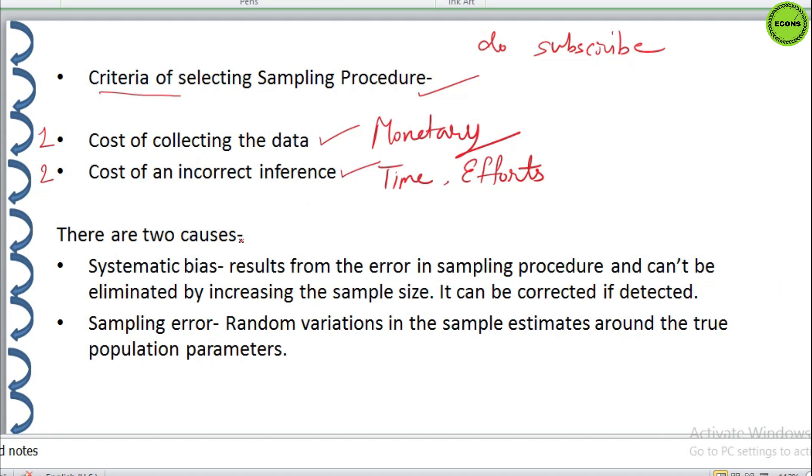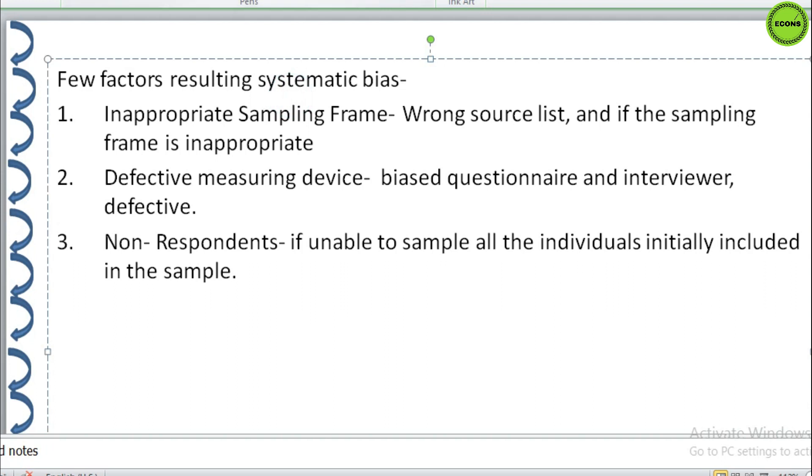The researcher must keep in view the two causes of incorrect inferences, that is systematic bias and the sampling error. A systematic bias results from error in the sampling procedure and it can be reduced or eliminated by increasing the sample size. At best, the causes responsible for these errors can be detected and corrected. While sampling errors are the random variations in the sample estimates around the true population parameters. So, first we will describe the reasons of the systematic error or systematic biases.